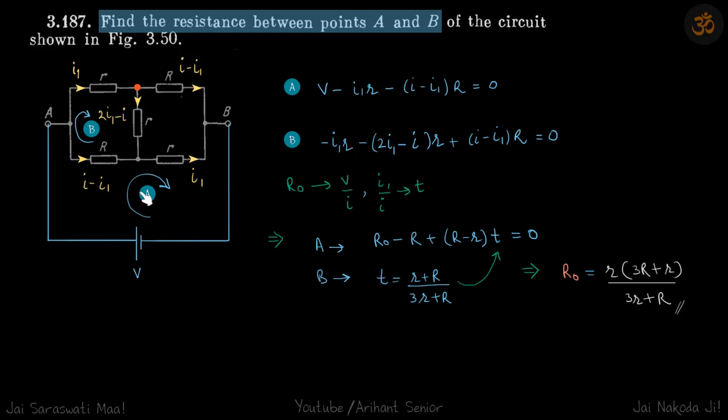So we can go for these two loops and try and get the values of I1 and I. So for this loop, let's start from here. So let this be zero. This becomes V. So V minus, we are going from this top one, minus I1 R minus I minus I1 into R is equal to zero.